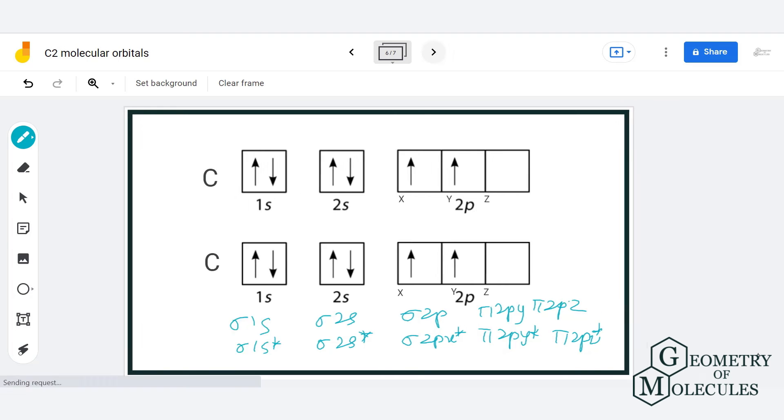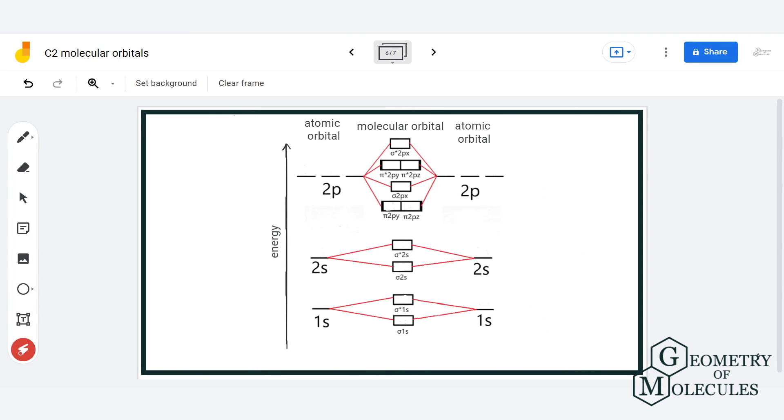Now this is what arrangement of molecular orbitals will look like. These are the atomic orbitals of carbon which combine to form molecular orbital of C2. Now each carbon atom has 6 electrons so let us put them in the atomic orbital first.